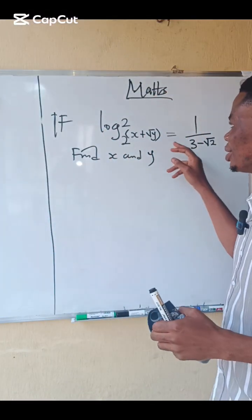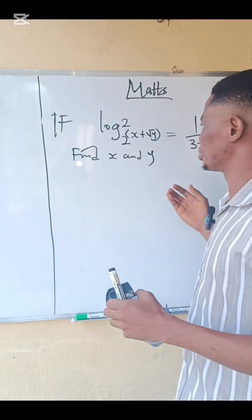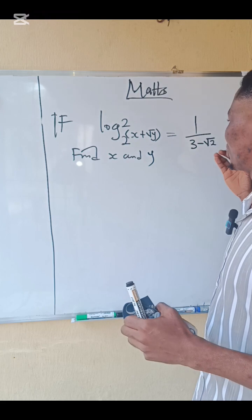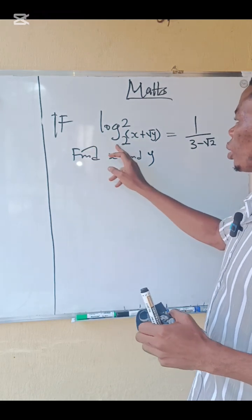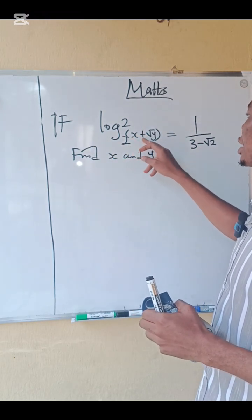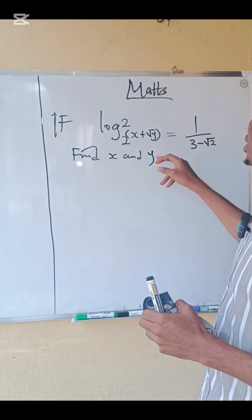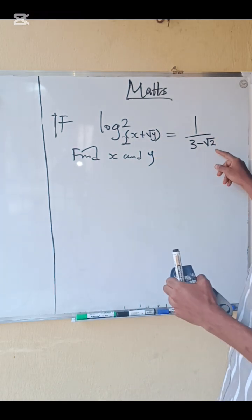Can you solve this question? You can pause the video and try it. We are asked to find x and y if log base 2 of 2 raised to (x plus root y) equals 1 over (3 minus root 2).